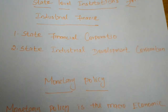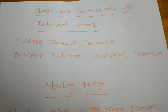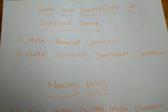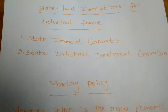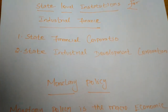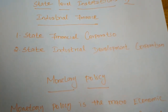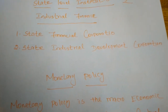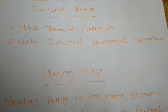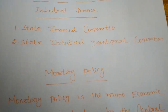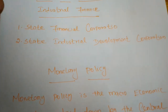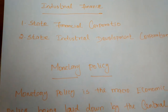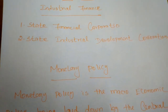Next is State Industrial Development Corporations. This is also one of the state level institutions for industrial finance. The industrial development corporations have been set up by the state governments and are wholly owned by them — fully owned and governed by the state government itself, without any central government intervention. These institutions are not merely financing agencies.